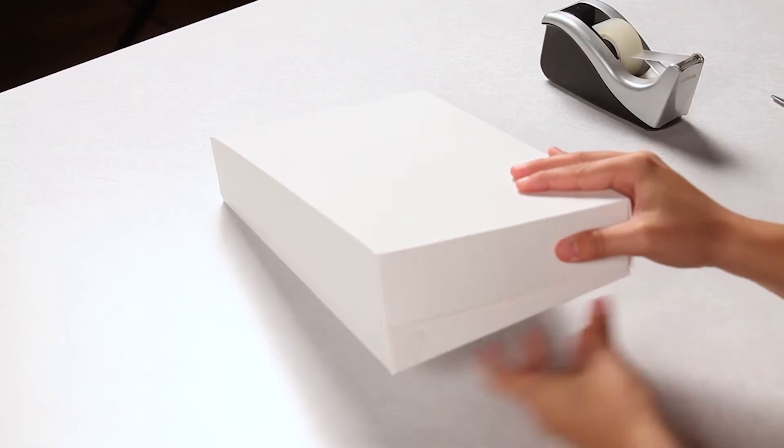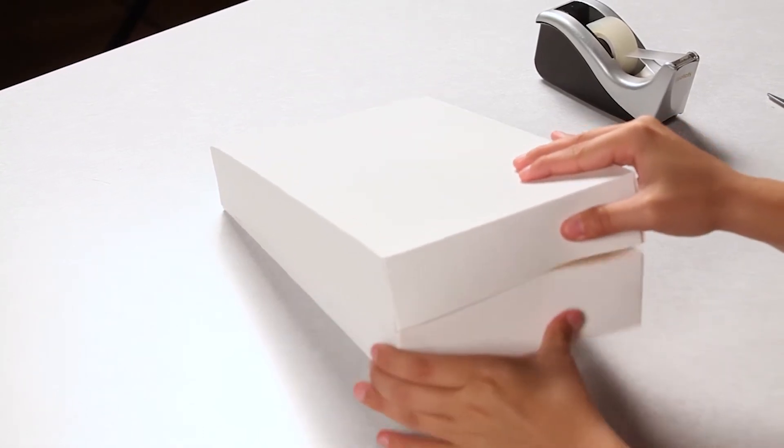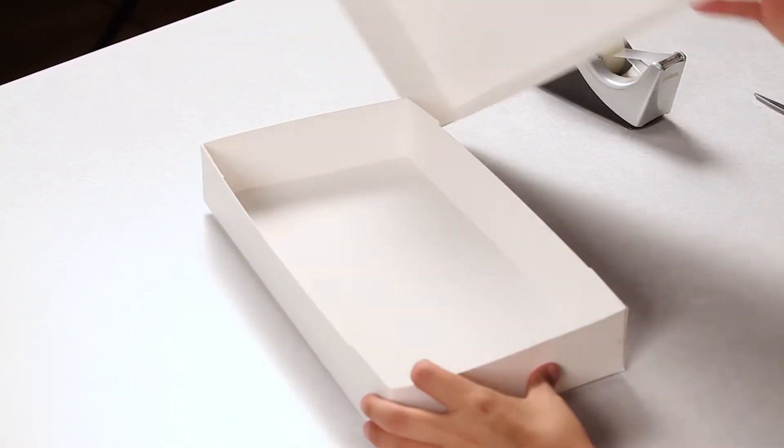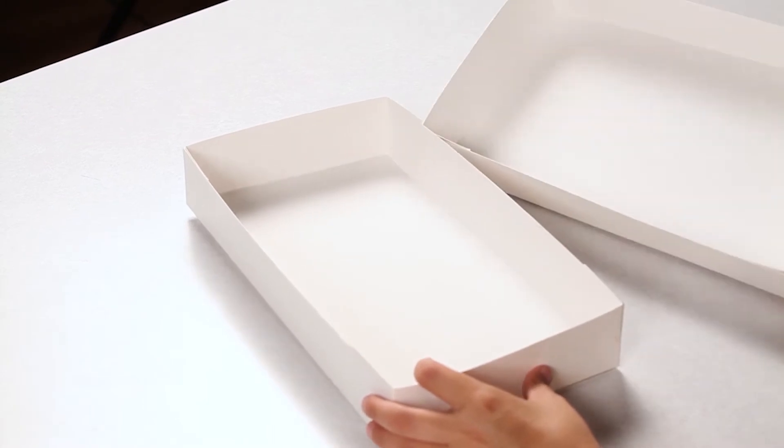These types of boxes are composed of two separate pieces: a bottom, sometimes called the tray, and a top, often called a lid.